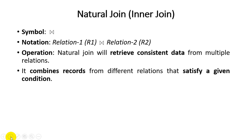It combines records from different relations that satisfy a given condition. In our previous lecture we used cross product, where the user retrieves multiple tuples among multiple relations. Similarly, natural join combines records from different relations that satisfy a user-defined condition. We will study the steps of how natural join produces output and the difference between cross product and natural join.